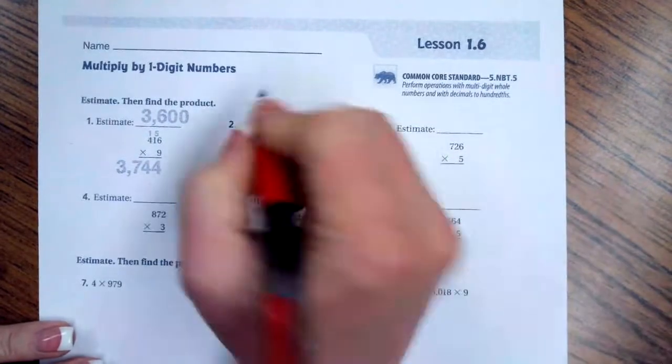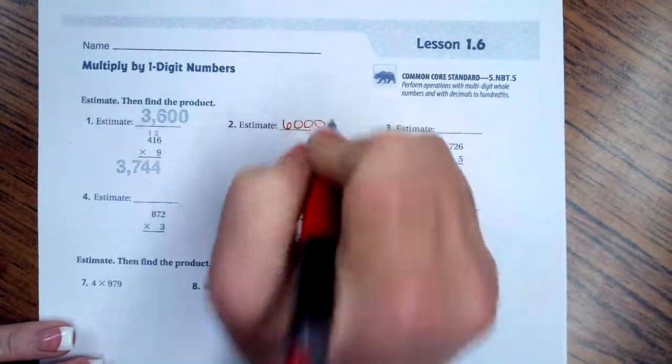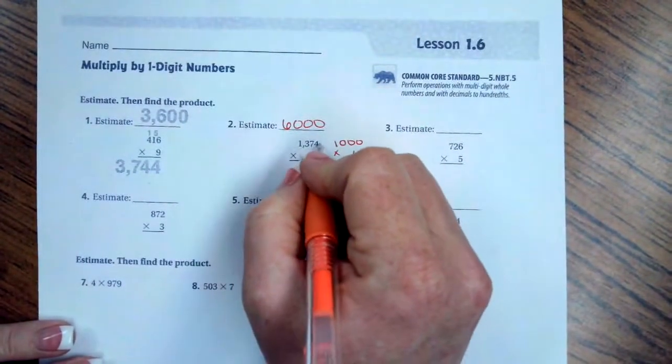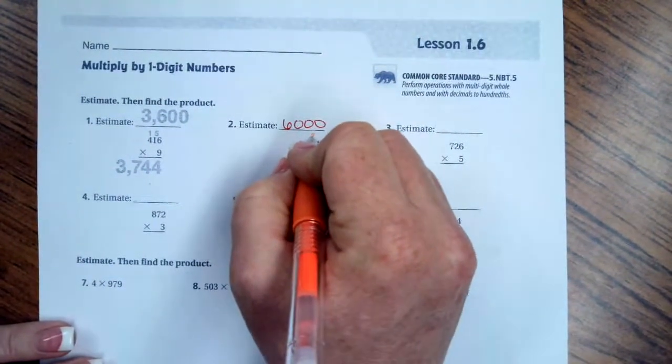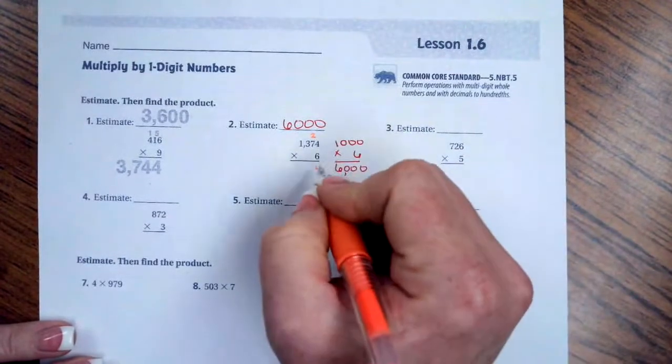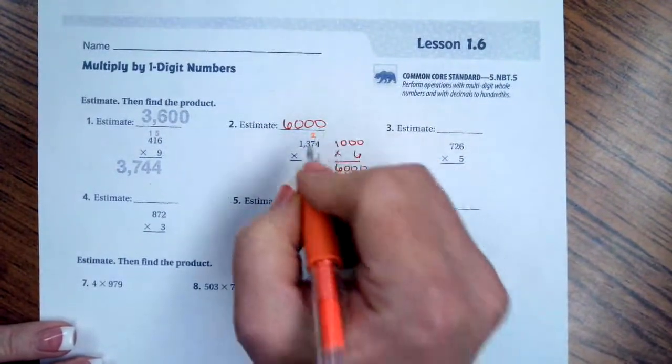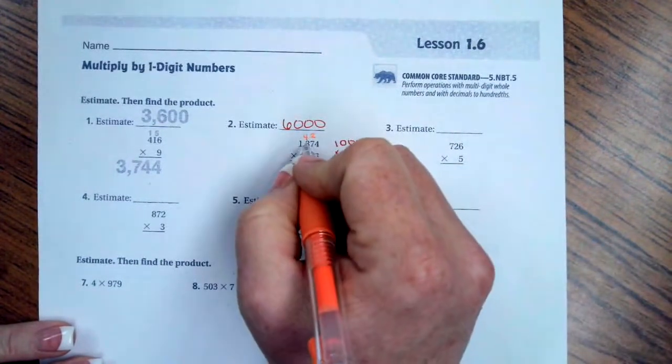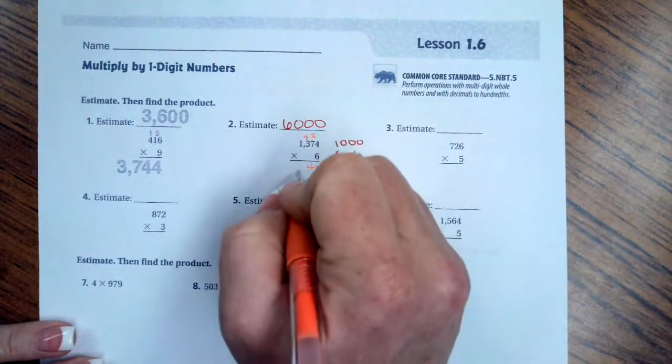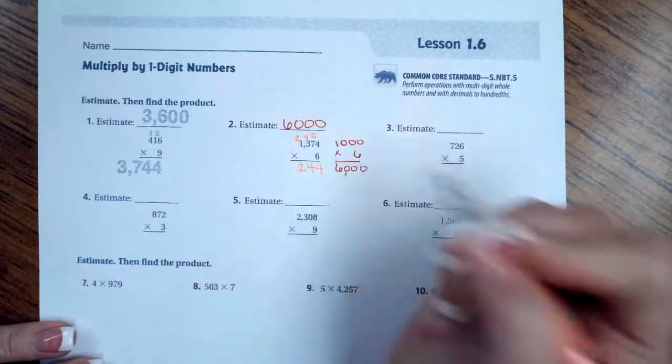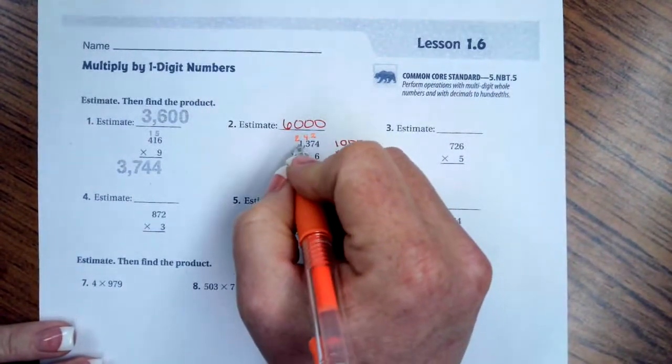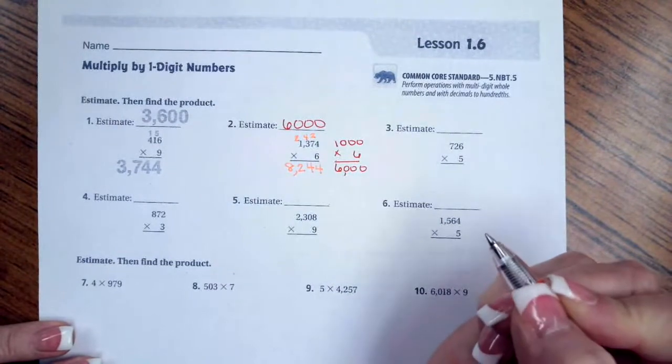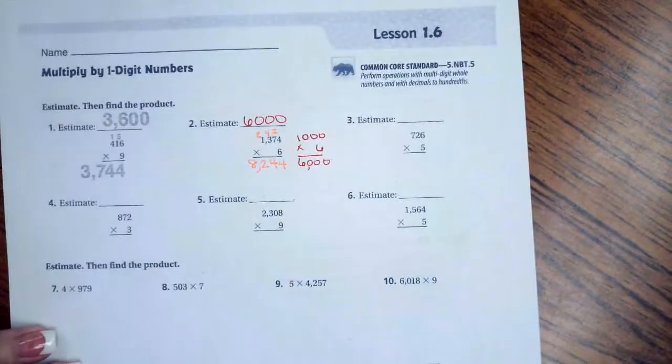Now we're going to go ahead and do the actual math. So six times four is twenty-four, I'm going to carry my two. Six times seven is forty-two plus two is forty-four, I'm going to carry my four. Six times three is eighteen plus four is twenty-two, I'm going to carry my two. Six times one is six plus two is eight. That is your final answer.